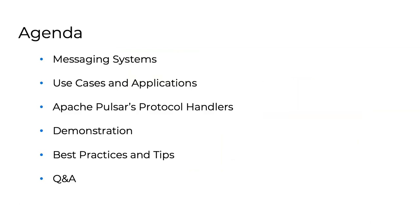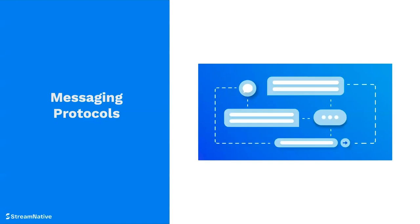I'm going to talk about messaging systems in general, how they evolved, and some of the problems with that. Then talk about use cases and applications for multi-protocol messaging — is it just a novelty or an actual business application? I'll talk about how Pulsar solves this problem with protocol handlers, enabling Apache Pulsar to speak different protocols, then do a demonstration, and then follow-up questions.